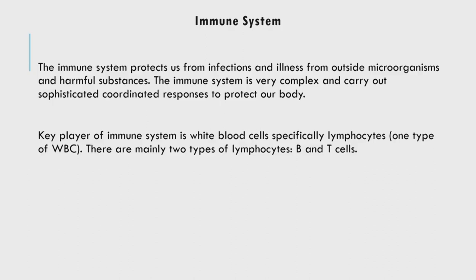White blood cells are primarily responsible for the immune system of the body. One type of white blood cell particularly important is lymphocytes. Lymphocytes are primarily the key players in our immune system, and there are mainly two types: B cells and T cells — broadly serving the immune system and protecting our body from outside agents.